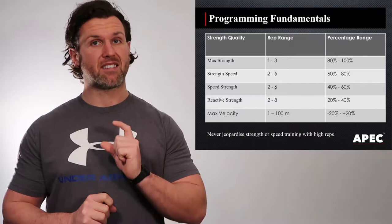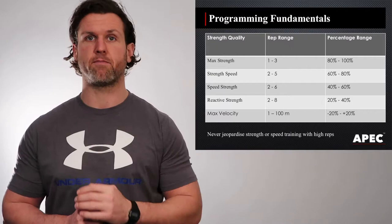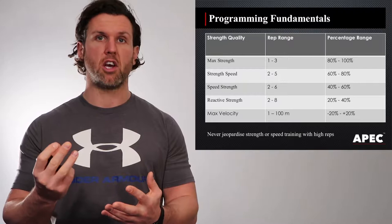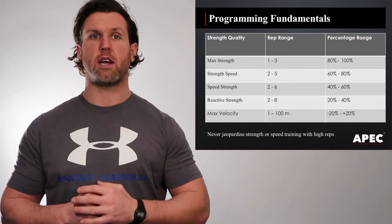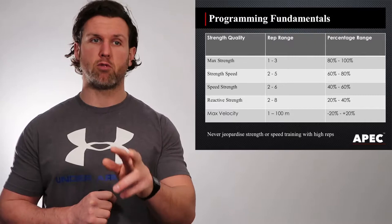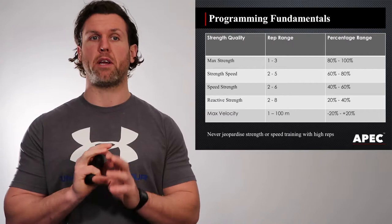When it comes to developing speed-strength, we need to develop that in the rep range of two to six. The reason why the reps are getting slightly higher is because there's been a lot of literature and publications done around the best velocities being recorded at the second and third repetition. The percentage range is 40% to 60% of our one repetition max. Looking at developing reactive strength, this is normally best done from two to eight repetitions, with a percentage range of 20% to 40% of your one repetition max.